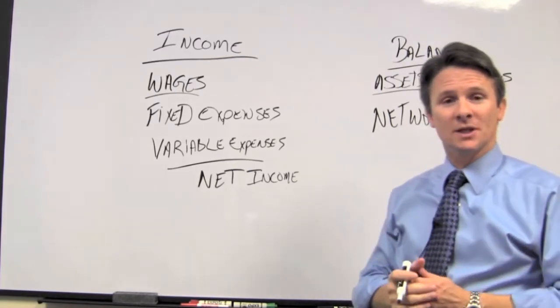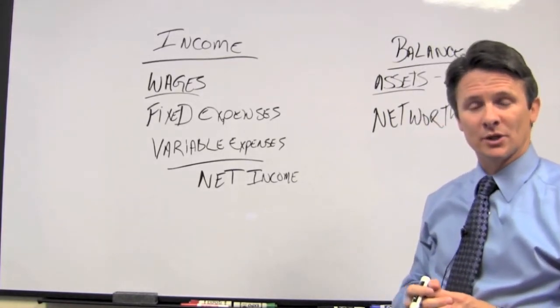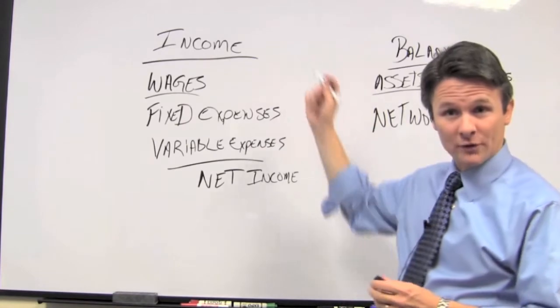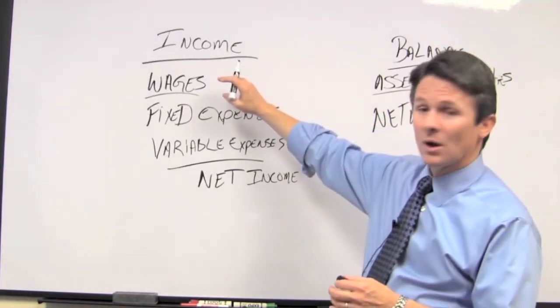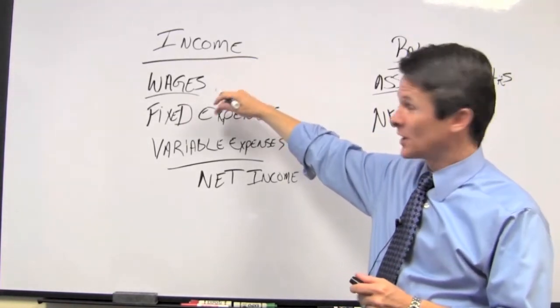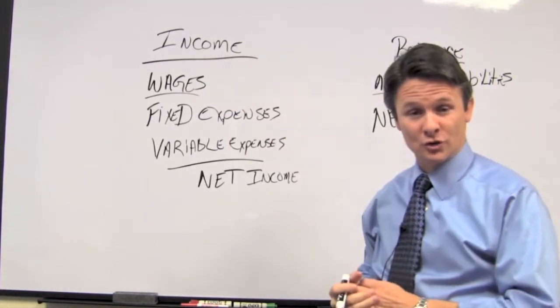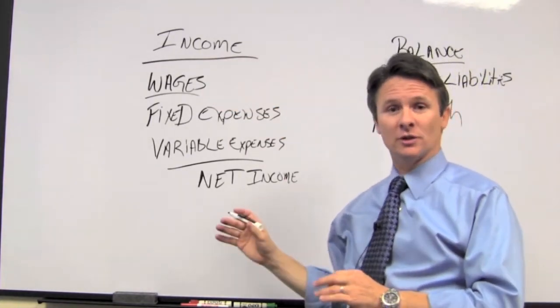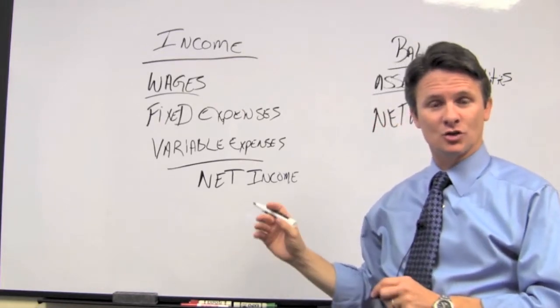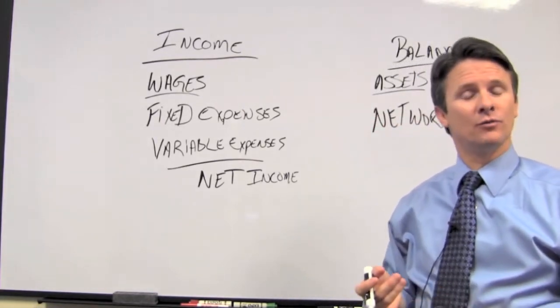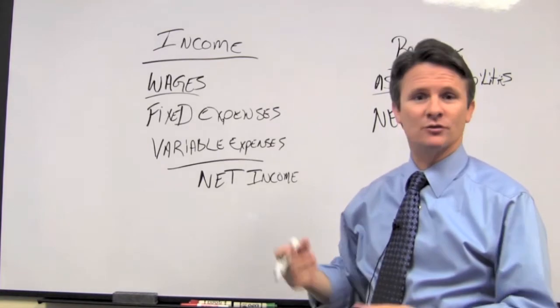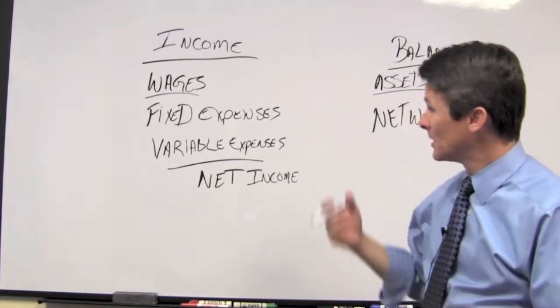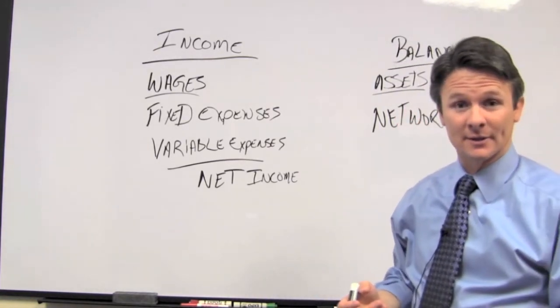Now, in a financial planning engagement, some of the things that we look at pretty closely are, starting from the income statement, how large are the wages? Typically, is there one or two? When you have a two-income household, your financial plan generally is much more stable because you have two incomes. If you lose one because of a loss of job or any other issue that may come up, you still have another income that's coming in.